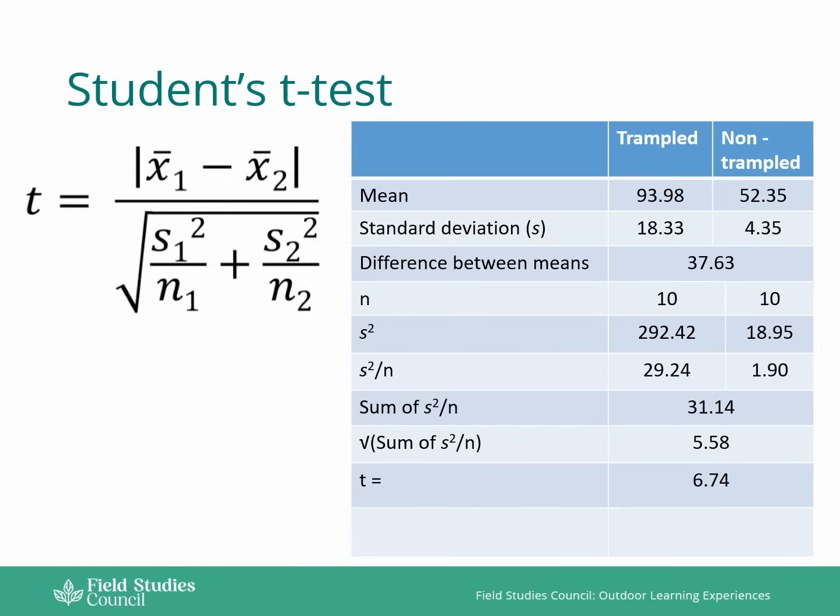This is the value that we're then going to compare to a critical value in order to see whether it's significant or not. In order to do that, we need to know something called degrees of freedom.